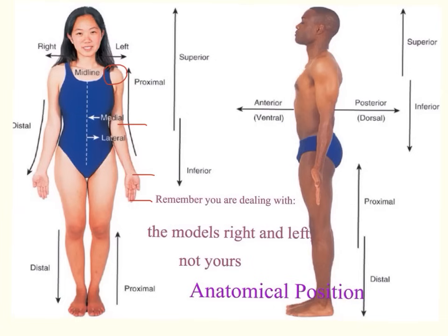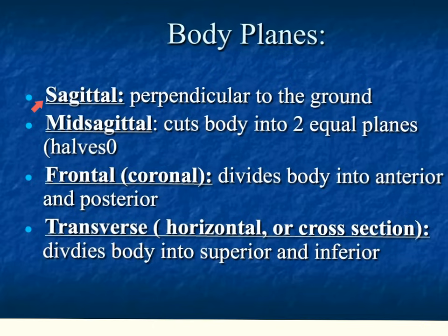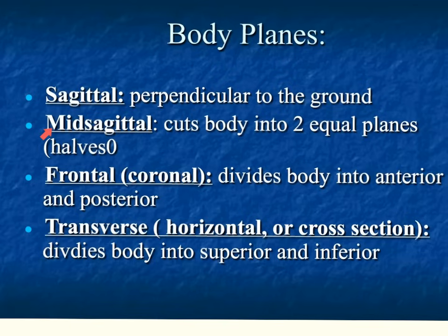With regard to the body planes, imagine a person standing in an upright position. Imagine you are dissecting this person with imaginary vertical up-and-down and horizontal right-to-left planes — this is the best way to describe the anatomical planes. Anatomical planes can be used to describe any body part or the entire body. The first one is the sagittal plane, also known as the lateral plane, which is perpendicular to the ground. It is a vertical plane running through the body front to back, dividing the body into a right and a left. If it divides the body into an equal right and left, we call this a mid-sagittal cut.